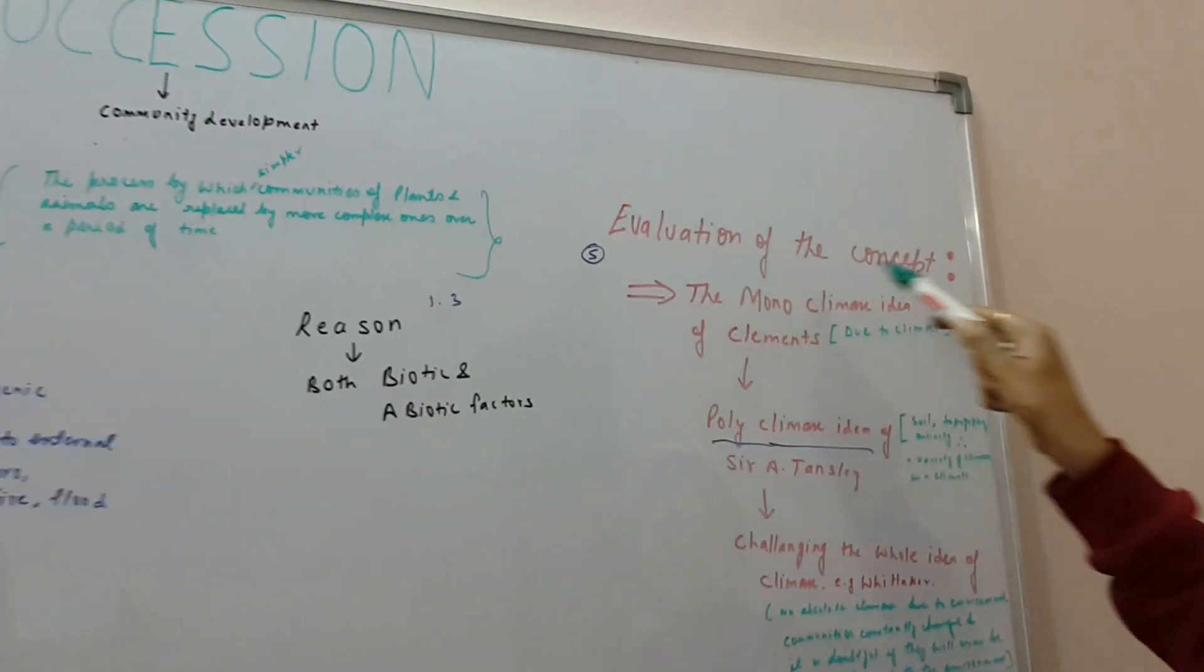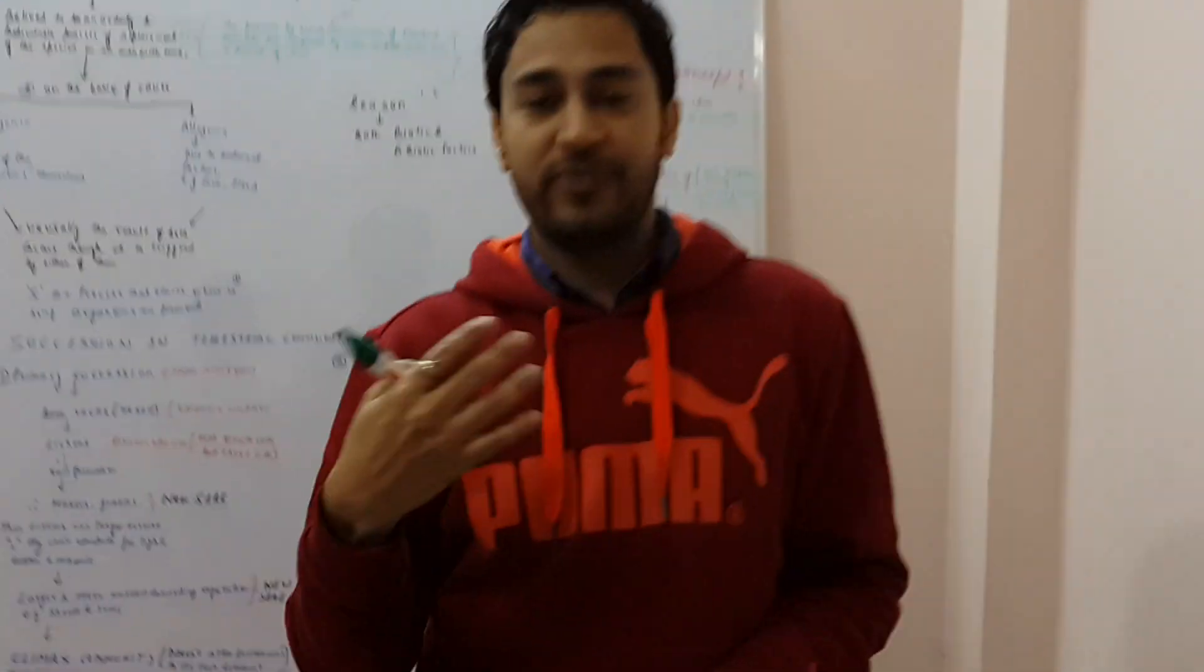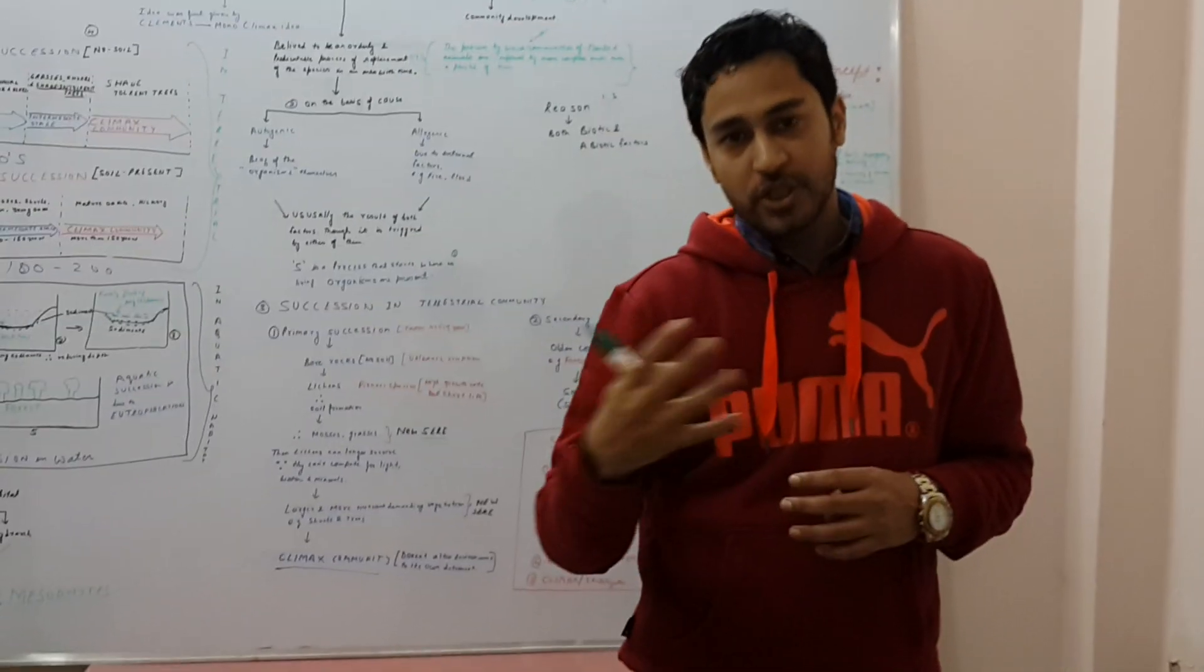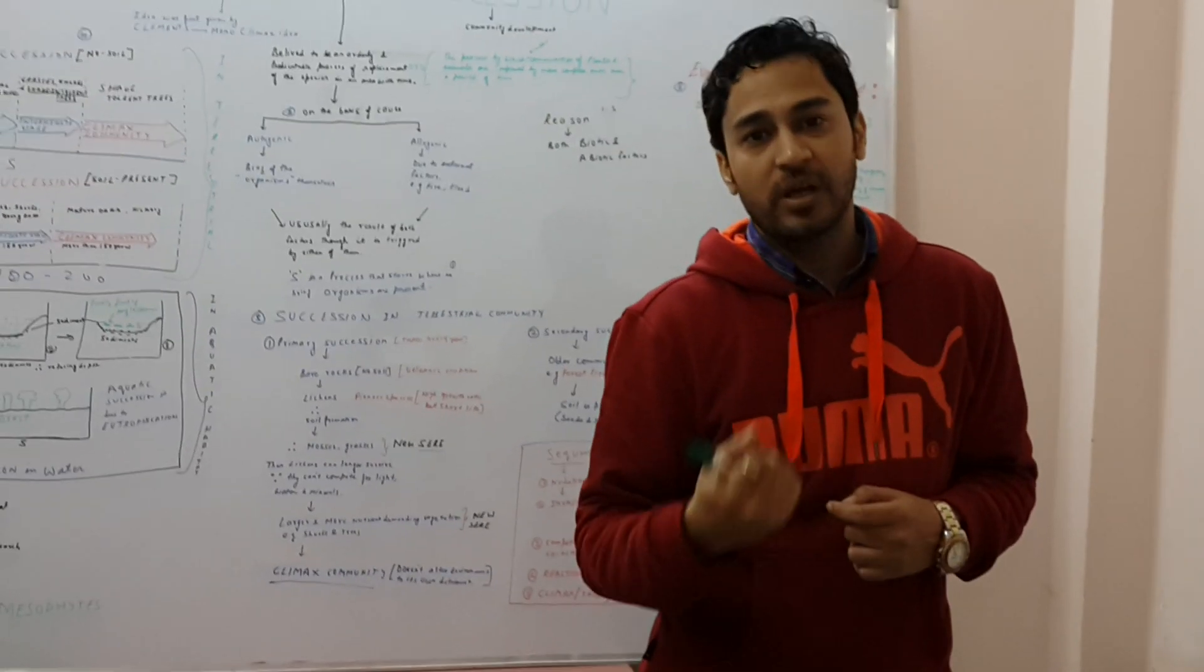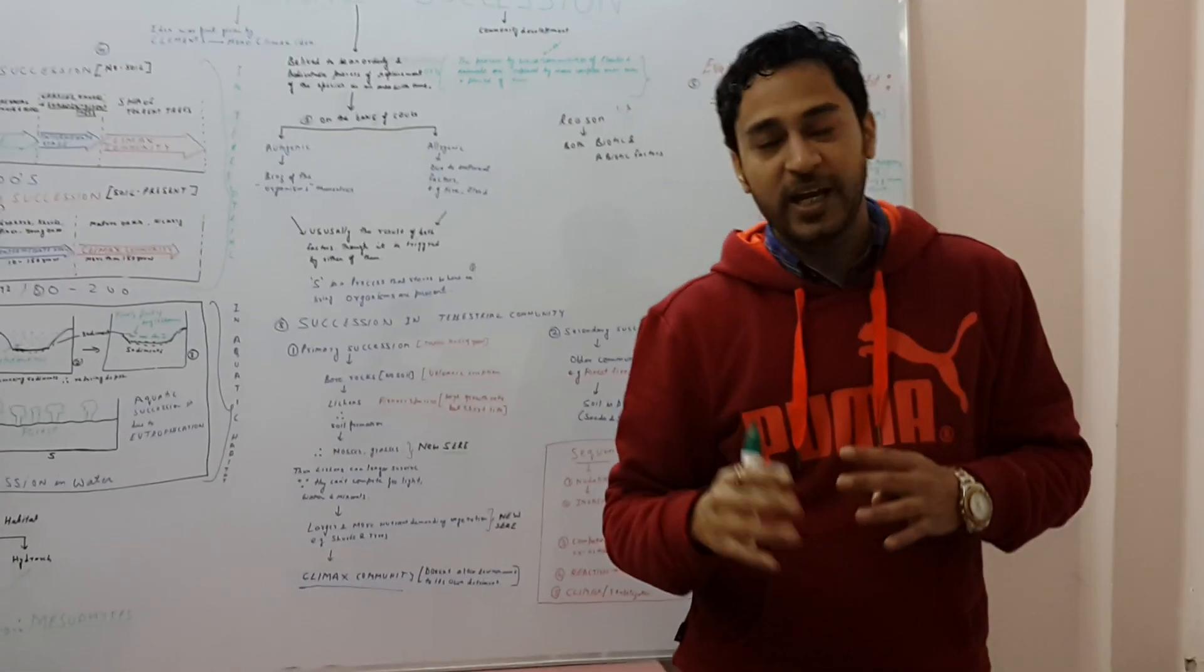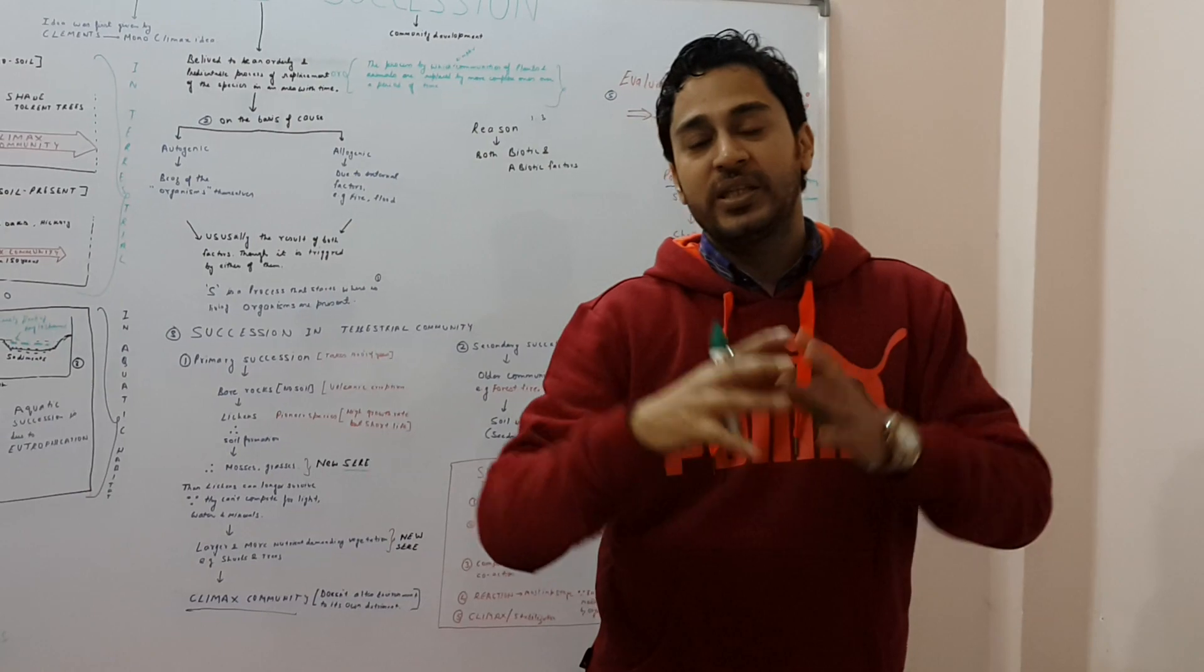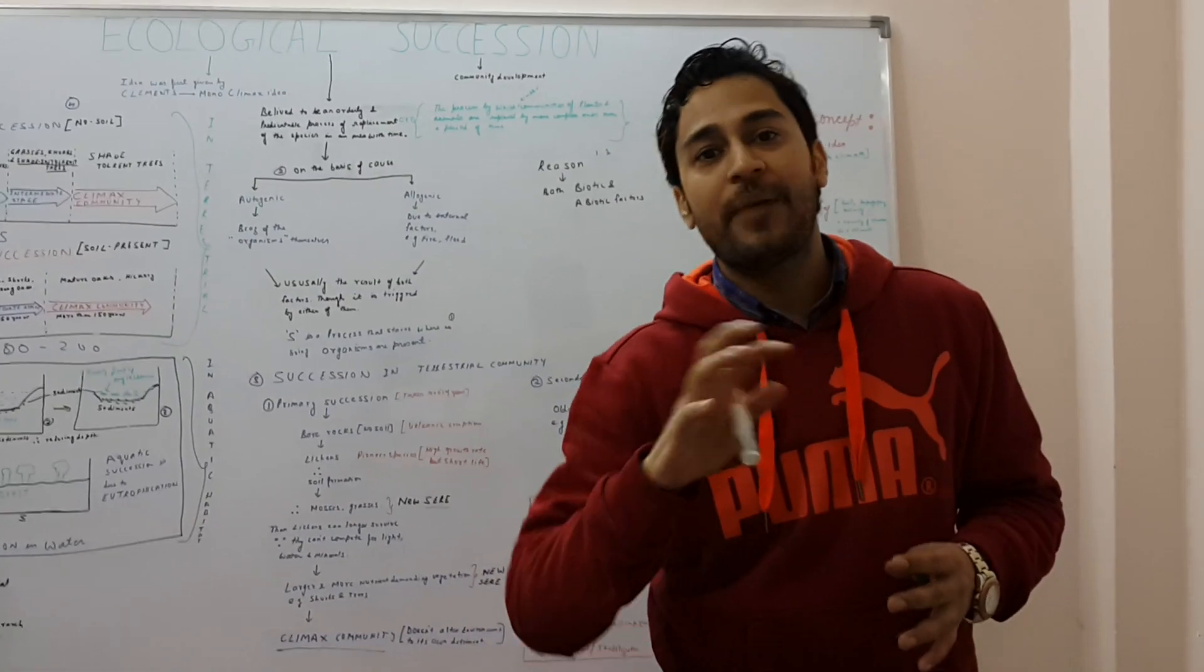Now let's talk about the evolution of the concept. Clemens had given the concept of climax and he had given a mono-climax concept because he believed that it was only climate that affected the succession. This enjoyed a long time of acceptability within the scientific community. But later, a new concept called polyclimax concept has come, which means that not just climate, other factors like soil, temperature, or gradient also affect. So within a climate, there can be a mosaic of different climaxes, so it is called a polyclimax concept.